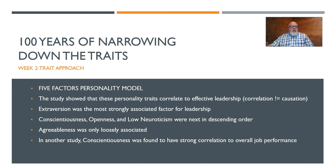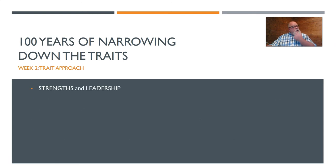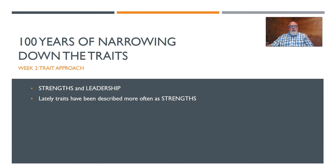Another finding: conscientiousness has a strong correlation to overall job performance for everyone, which maps to that good work ethic. As time has gone on, we've kind of stopped using the term 'traits' and started using 'strengths.' Books written in the last 15 years tend to talk about strengths rather than traits. Strengths are the ability to consistently demonstrate excellent work — you might be strong in one kind of work and not another.